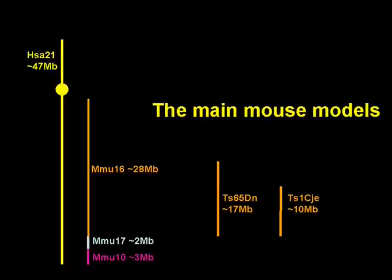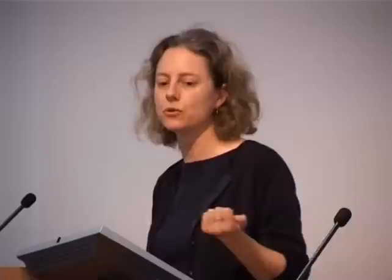Here's my plug for the value of mouse models. When Roger Reeves looked at the cerebellum — the part of the brain at the back that controls fine motor control such as playing the piano — he found the number of neurons was reduced compared to normal animals. They then went back and looked at the cerebellum in people with Down syndrome and found a reduced number of neurons there as well. That would not have been seen without looking at the mouse first. If you have a genetic defect in a mouse, it tells you an awful lot about what goes on in humans.